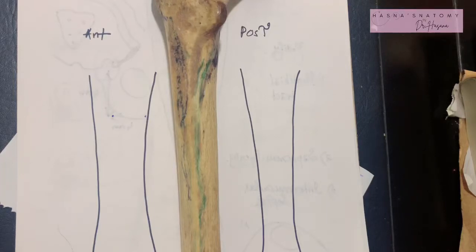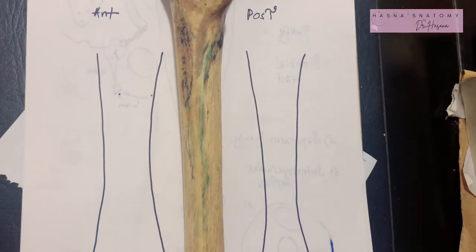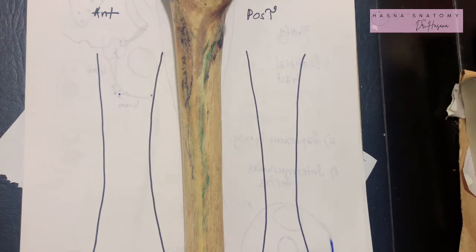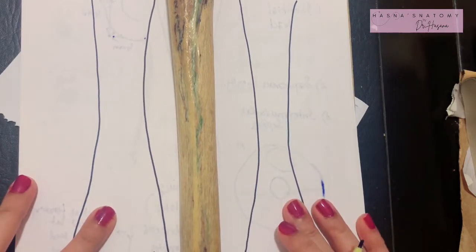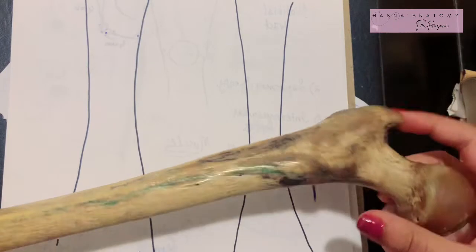Welcome back to Hasna's Anatomy. Now we'll discuss the shaft of the femur. The shaft of the femur is quite complex, not only in its bony features but due to its attachments. However, Hasna's Anatomy is all about making things easy. I have portrayed the shaft of the femur in a more diagrammatic form because I believe that's an easier way to explain this.